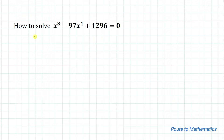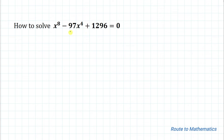The given question is how to solve x to the power 8 minus 97 x to the power 4 plus 1296 equals to 0. We are asked to find the solution of x.